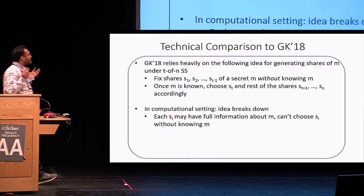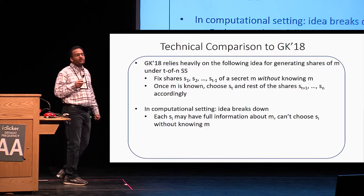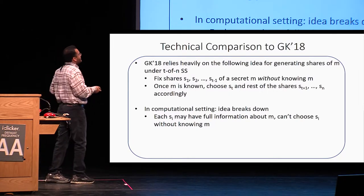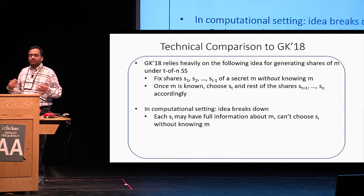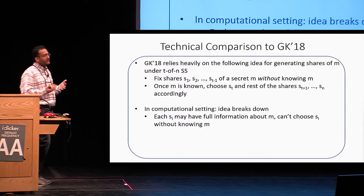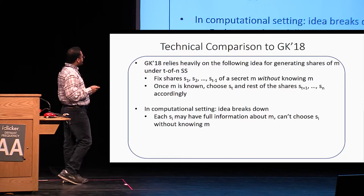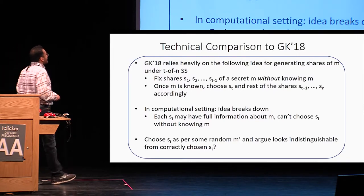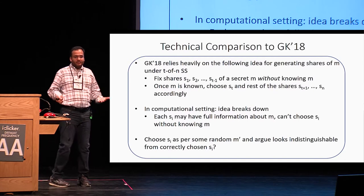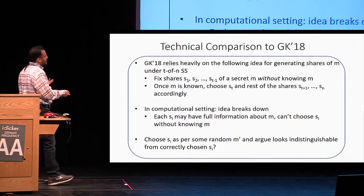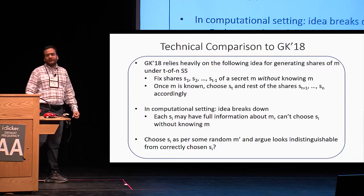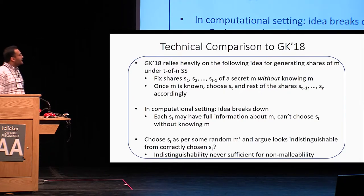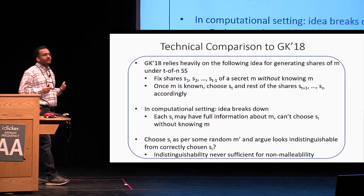Unfortunately, in the computational setting this idea breaks down completely. Each share may have full information about message M, so it is no longer possible to sample a share without knowing M — the share hides the message only computationally, but information-theoretically may have full information. One thought is to choose share S_i according to a random message M prime and argue indistinguishability from the correctly chosen S_i. However, indistinguishability is never sufficient for non-malleability, which is a much stronger property. So these ideas do not work for us.